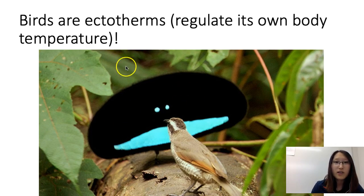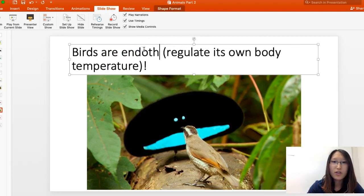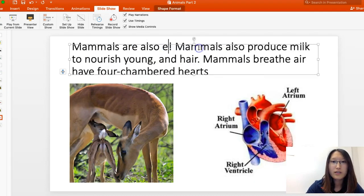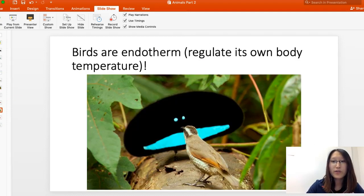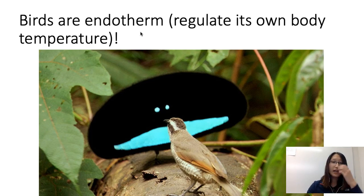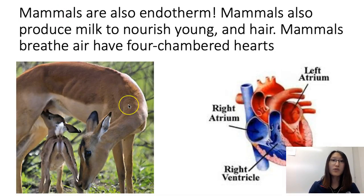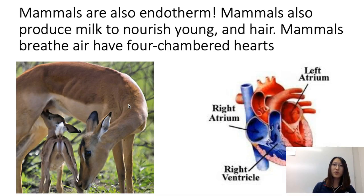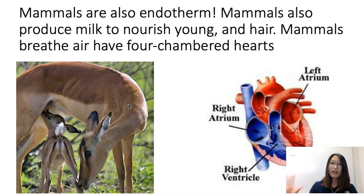Birds are endotherms, and mammals are also endotherms. Endotherms are organisms that regulate their own body temperature — endo means inside, therm means temperature, so they produce body heat inside their bodies. Ectotherms, on the other hand, are cold-blooded animals. They still produce a small amount of body heat, but they depend primarily on the outside environment to regulate their temperature — ecto means outside.